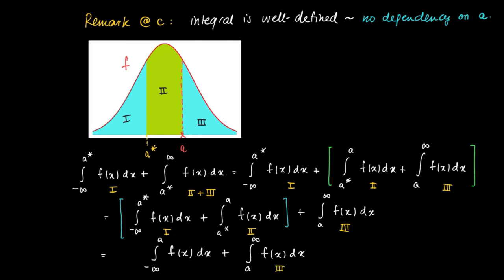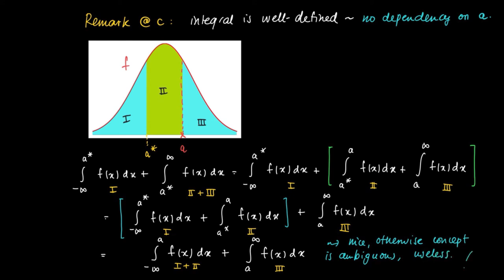The conclusion here is: when we take another a star as an alternative to a, then by regrouping we can see that the integral from minus infinity to a star plus the integral from a star to infinity of f(x) dx equals the integral from minus infinity to a plus the integral from a to infinity of f(x) dx. So we could have chosen a star just as well as a in order to define the integral from minus infinity to infinity. This is very nice — otherwise, the concept of the integral from minus infinity to infinity would have been ambiguous and therefore quite useless.